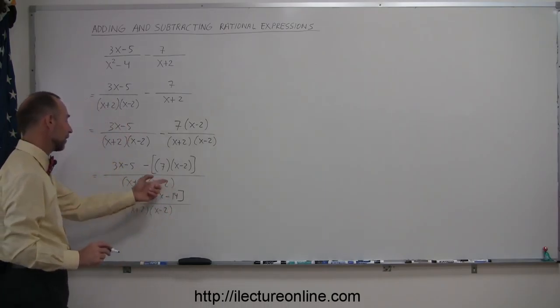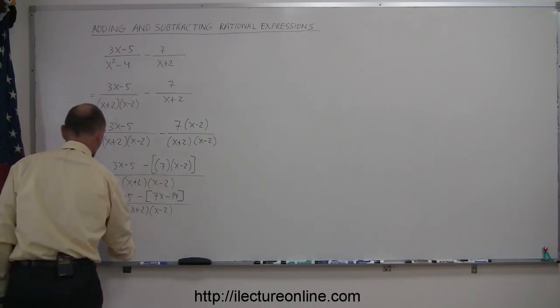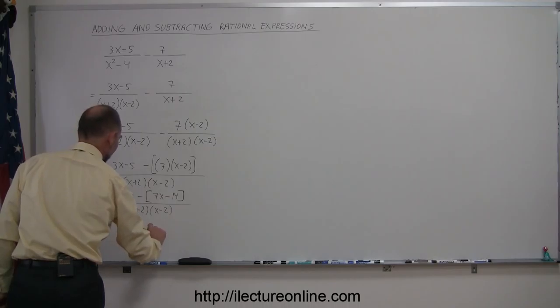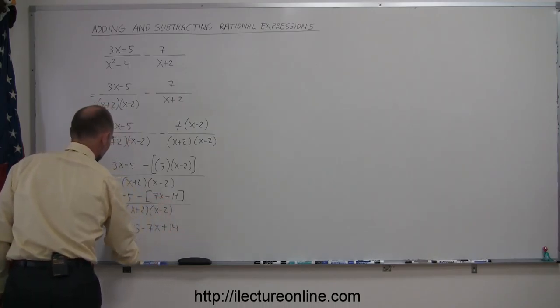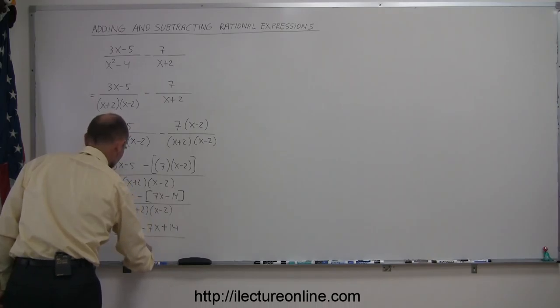And then finally, I can apply the negative sign to everything that's inside the brackets. So this is equal to 3x-5 minus 7x, and the negative times a negative becomes a plus 14, all divided by (x+2)(x-2).